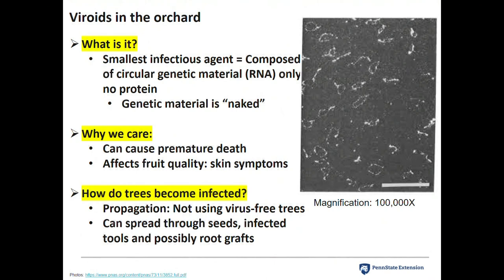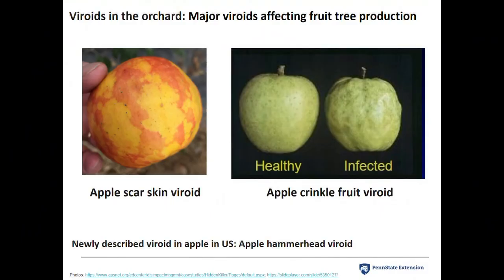There are some pretty important viroids in tree fruit: apple scar skin viroid and apple crinkle fruit viroid. These are really problematic in Asia — it was crisis-level as far as the impact. The viroid causes blotching on the skin that can become necrotic, scar over, and seriously misshape fruit. There is also a new viroid in the United States called apple hammerhead viroid. We have no idea yet if it causes symptoms, but because of modern sequencing technology, we were able to find it in apple.